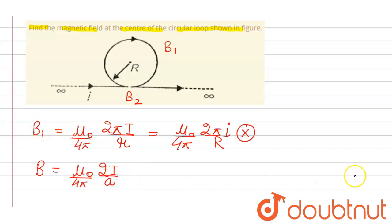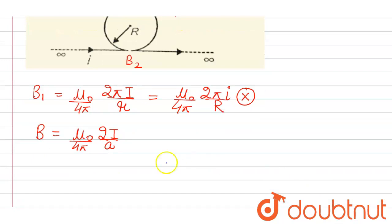So here if we apply this formula and find the value of B2 here, B2 we will get μ₀/(4π) × 2i/R and the direction of this will be outward, that is dot.